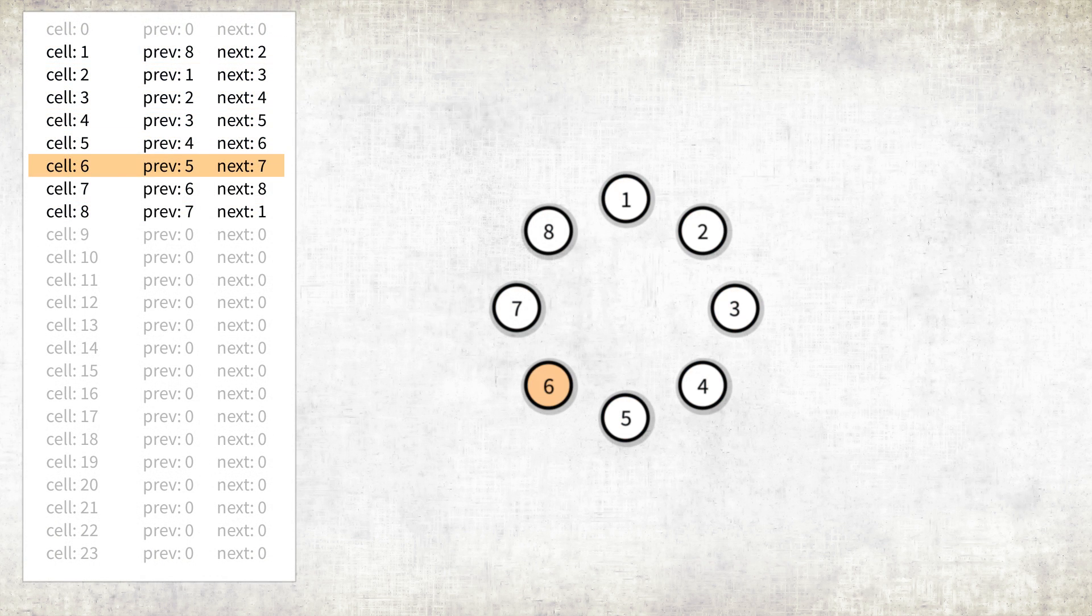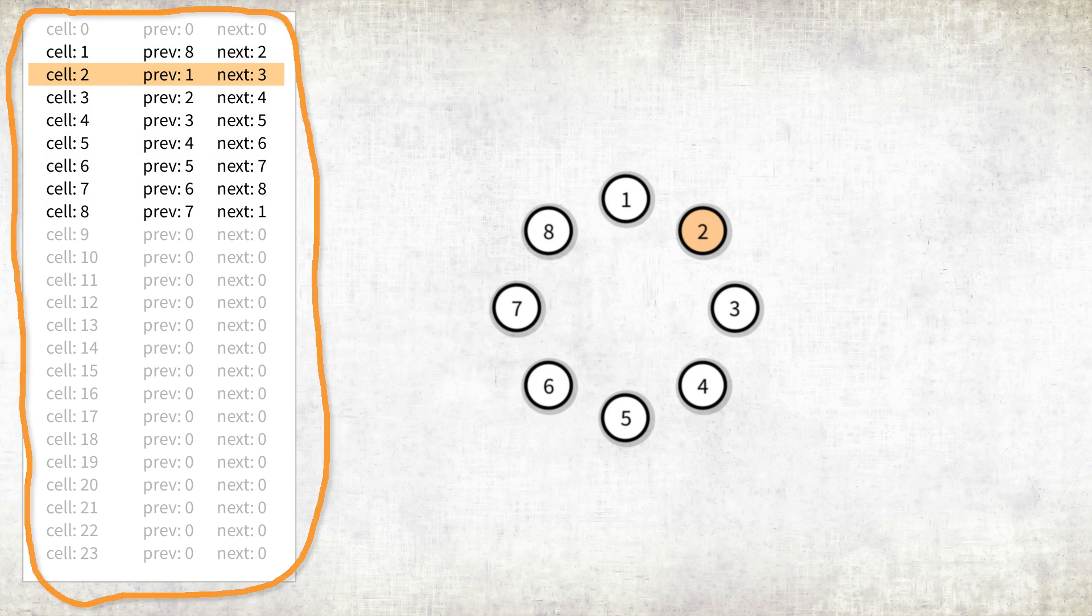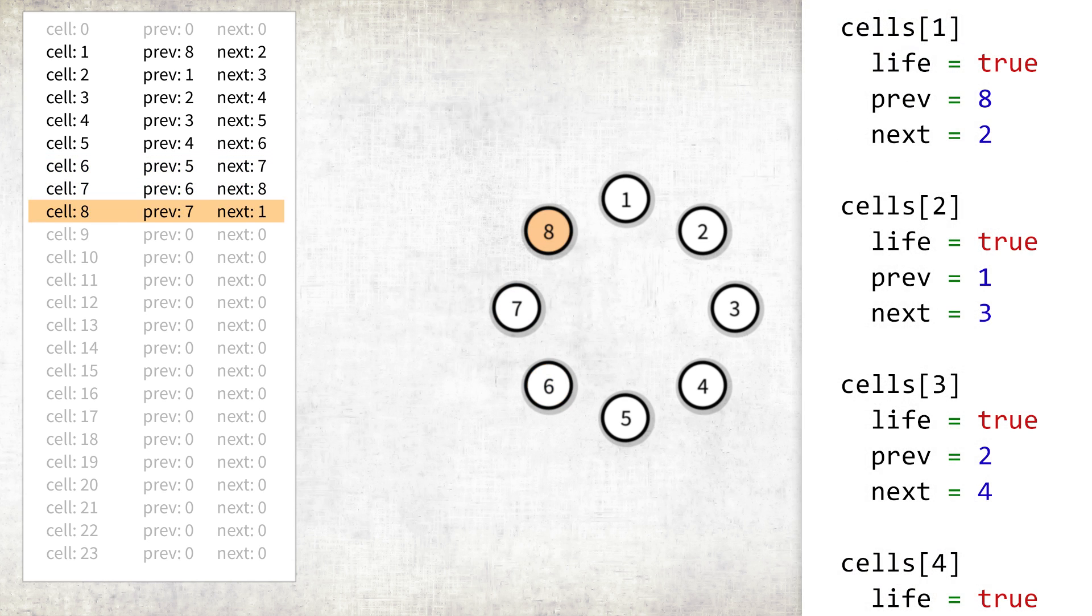Now let's see my solution. I've used a similar approach in my other projects. When the simulation begins, we immediately create a list with a size equal to the maximum possible amount of cells in the simulation. Each cell points to the previous and next cells and has a field indicating whether it is alive.